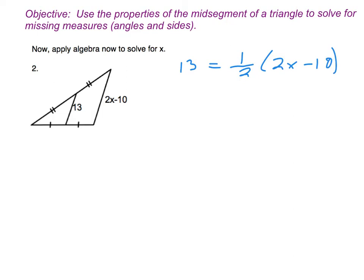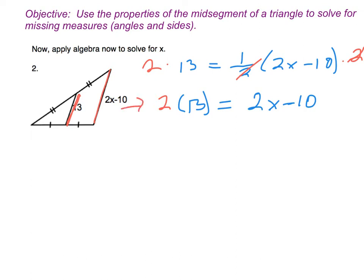That's one option for how we can write it. Some of you may be thinking the reverse — that if that's half of it, well then 2 times the mid-segment would equal the third side. So we could have written it as 2 times 13 is equal to 2x minus 10. We took the first equation and multiplied both sides by 2. The 2's on the right cancel out because it's times 2 and divided by 2 when we're multiplying by a half, so we end up with that second equation.